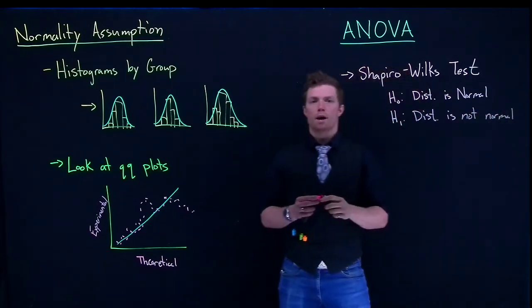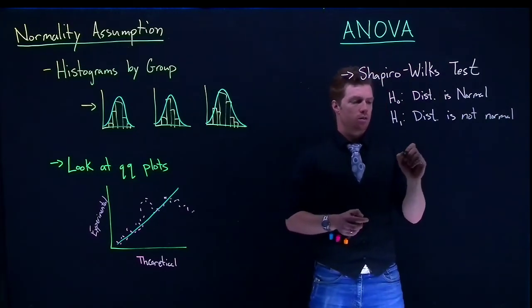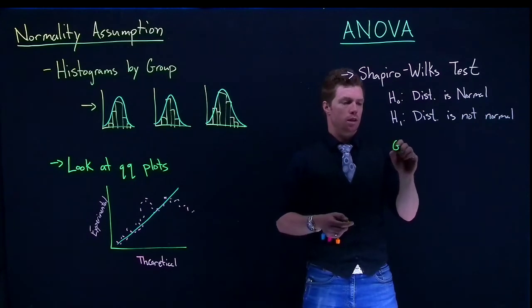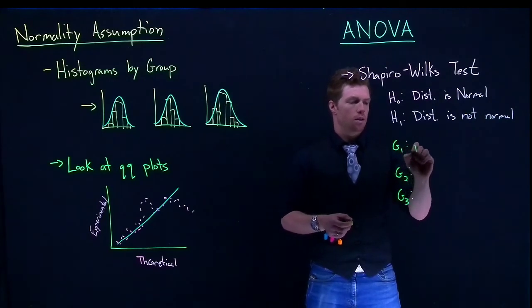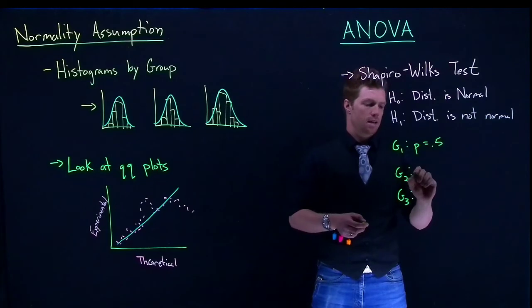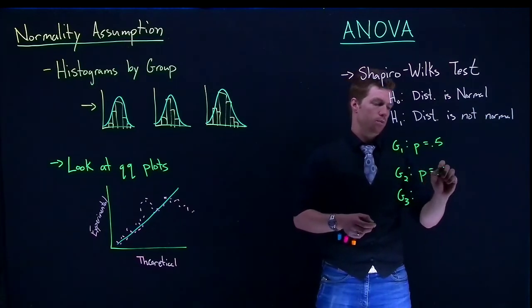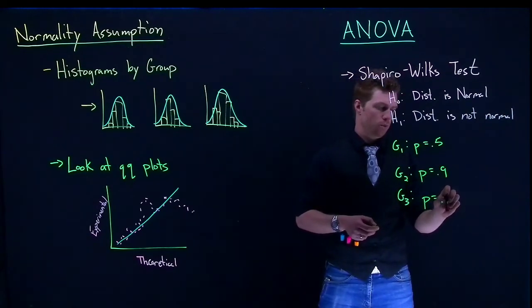We can do this by groups, and it will kick us out some individual p-values. So if we had three groups, group one, group two, group three. It will kick you out a p-value. Let's say this p-value equals 0.5, p-value equals 0.9, and then the p-value equals 0.2.